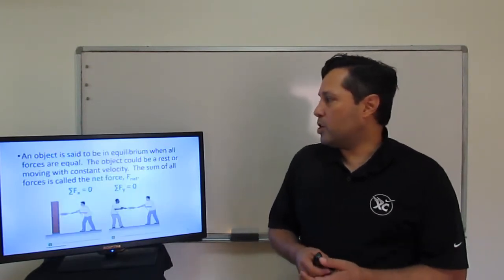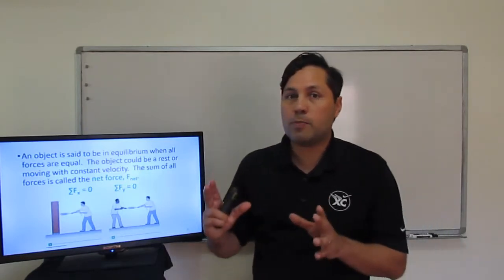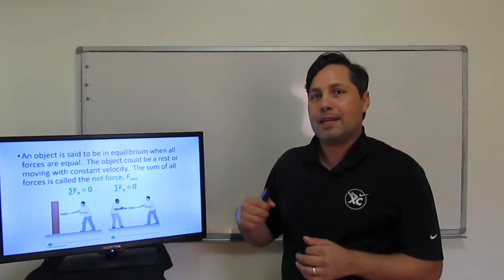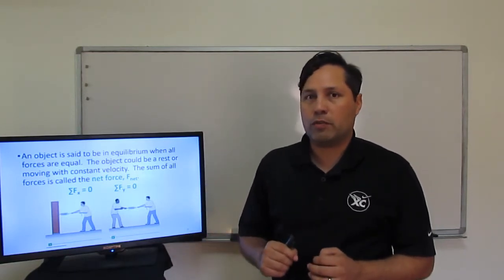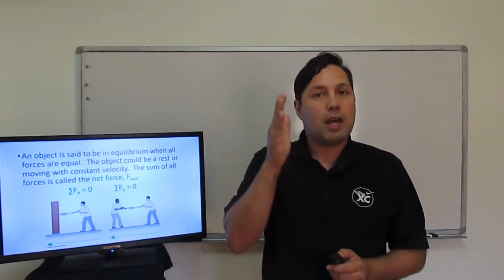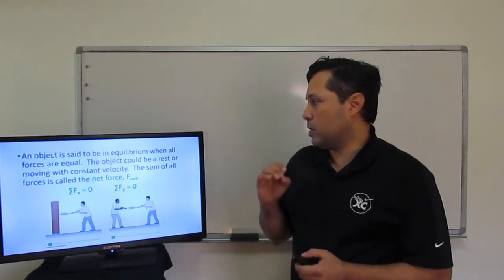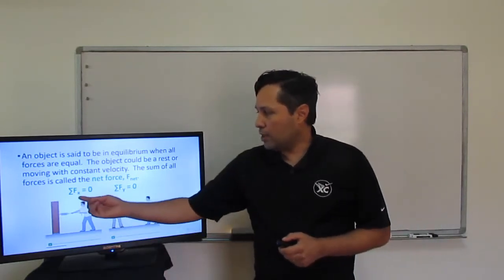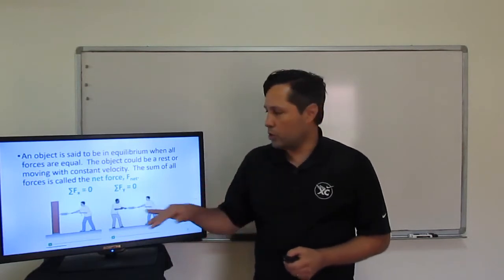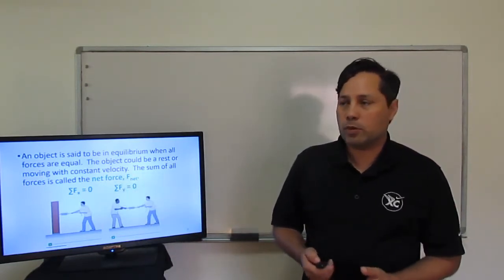An object is said to be in equilibrium when all the forces are equal. If an object is either not moving or moving at constant velocity, then there's no acceleration, so it is in equilibrium. All the forces — whether gravity and normal, or tension and friction — balance each other out to zero, both on the x-axis and on the y-axis. So our net force is zero, and we say the object is in equilibrium.